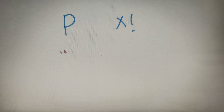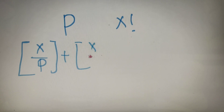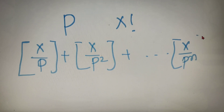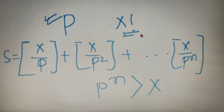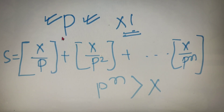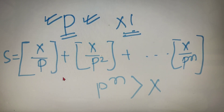Suppose we have to find the highest power of p in x factorial. We find the sum of the greatest integer values of x/p + x/p² + ... up to x/pⁿ, where pⁿ is greater than x. Using this sum S, we get the highest power of p in x factorial. One very important fact: this formula is only valid when p is a prime number. We will also learn how to handle non-prime numbers, but let us first check for prime numbers.